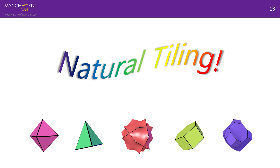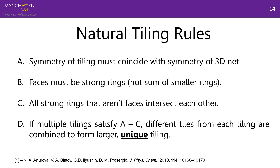Luckily, a scheme already existed known as natural tiling. A natural tiling follows strict mathematical rules. The four main rules are: the symmetry of the tiling must coincide with the symmetry of the 3D net; faces must be strong rings; all strong rings that aren't faces must intersect each other; and if multiple tilings satisfy the first three conditions, tiles are combined until a larger unique tiling is formed. That's where the word 'natural' comes from — the tiling is unique.